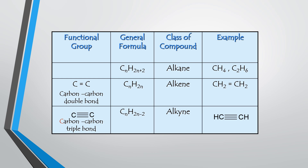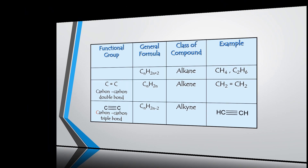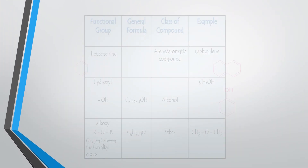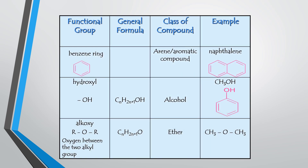The second functional group is the carbon-carbon triple bond, which belongs to the class of compound called alkyne. The example given is ethyne. The next functional group is the benzene ring, whose structure is 6 carbons joined together in a cyclic arrangement with alternating double bonds. The class of compound for the benzene ring is arene, or aromatic compound.